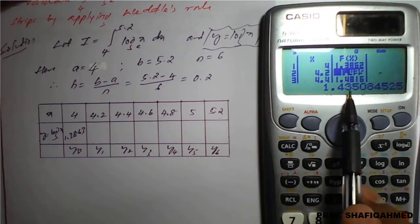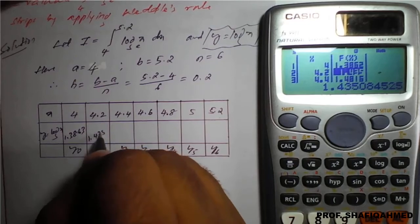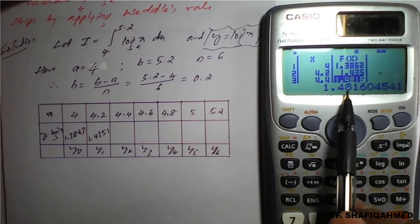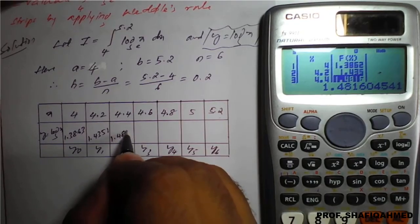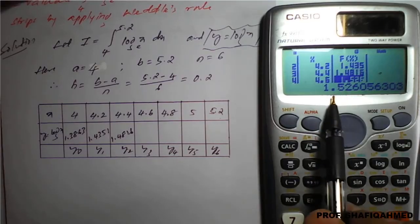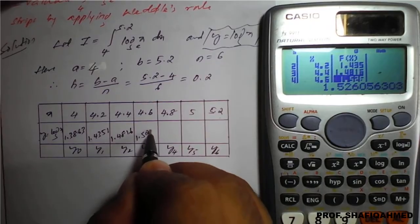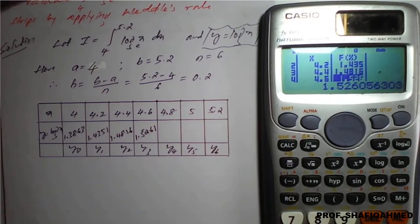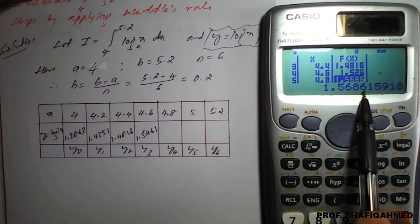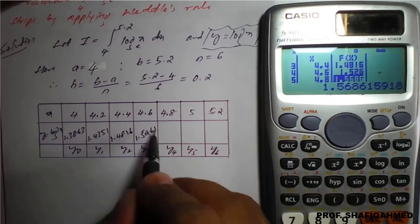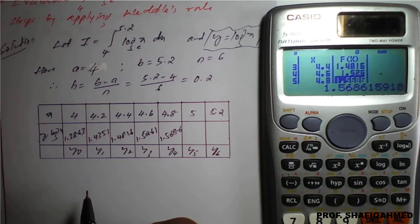Similarly, the next value is 1.4351, then 1.4816, and for 4.8, it's 1.5686.